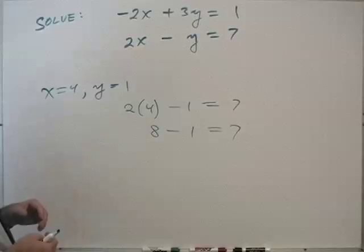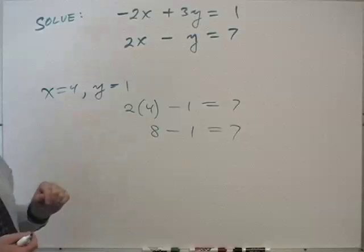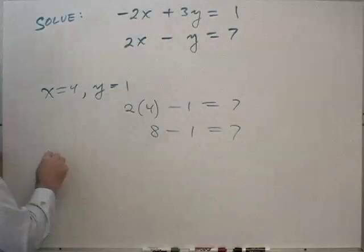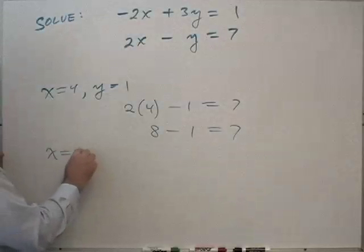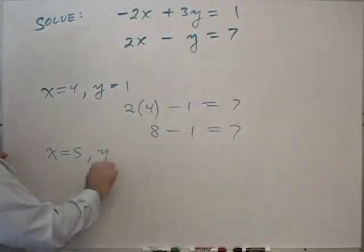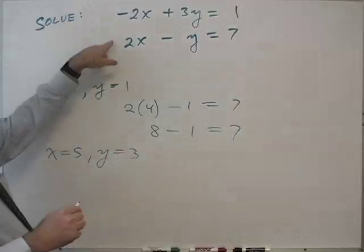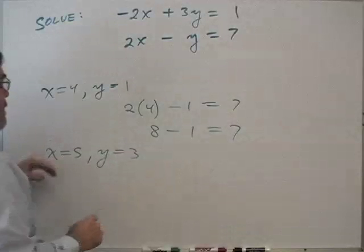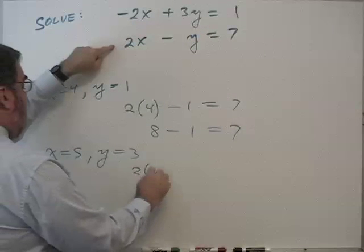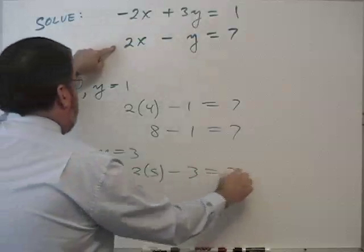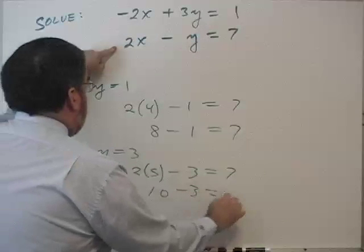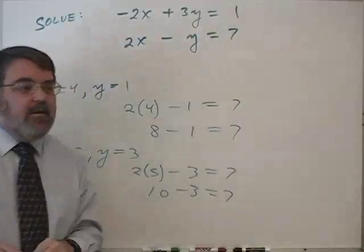You could imagine other numbers you could plug in. For example, x equals 5 and y equals 3 also solves the second equation. So we'd have 2 times 5 minus 3 equals 7. 10 minus 3 equals 7.